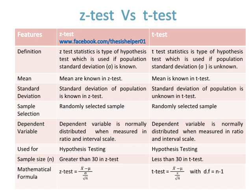Both formulas of Z-test and T-test are the same — the only difference is sigma and s used for standard deviation. Sigma is for population standard deviation, while s is for sample standard deviation.